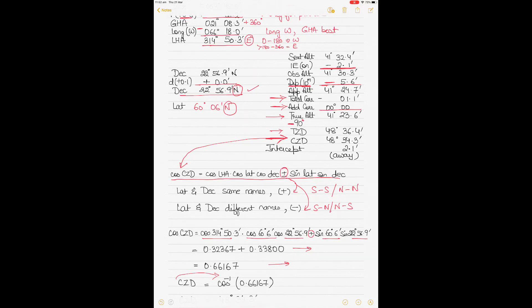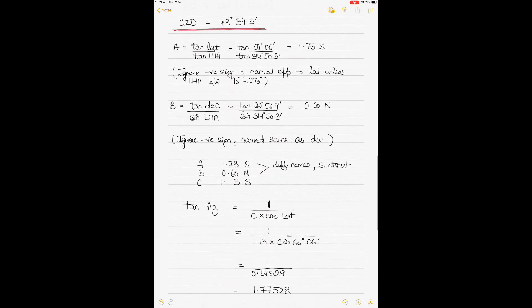Now compare TZD and CZD. Subtracting the smaller from the larger: 48° 36.4' minus 48° 34.3' = 2.1'. The rule: if true is tiny (TZD less than CZD), name it 'towards'; if TZD is more than CZD, name it 'away'. Here TZD is greater than CZD, so the intercept is 2.1' away.